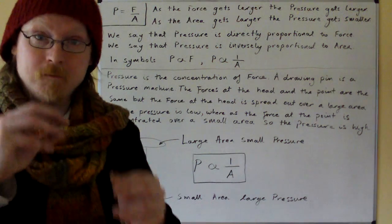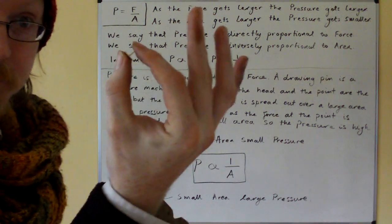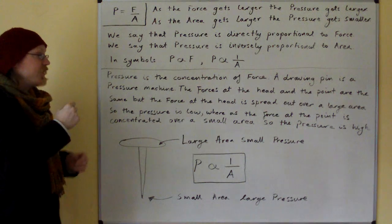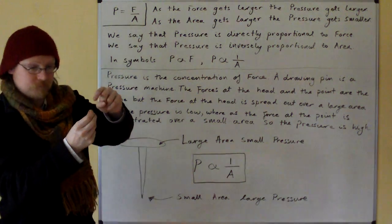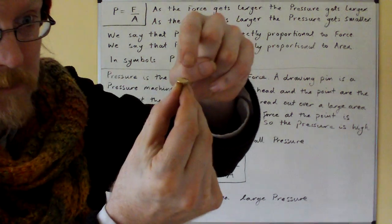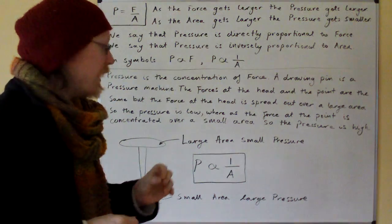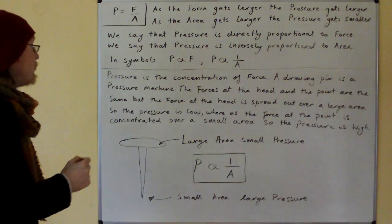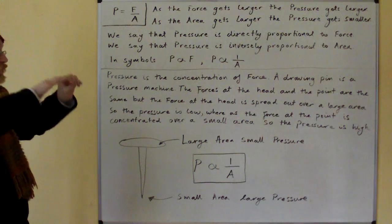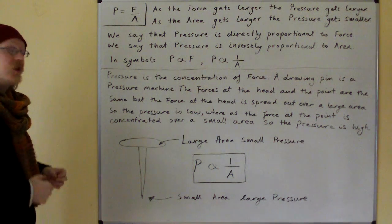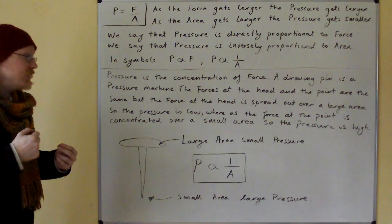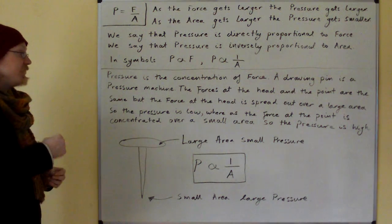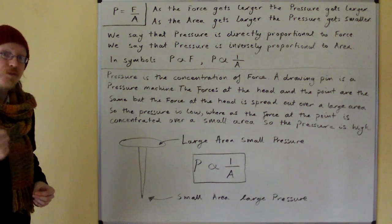The drawing pin is a pressure machine. The forces at the head and the point are the same. But the force at the head is spread out over a large area, so the pressure is low. Whereas the force at the point is concentrated over a small area, so the pressure is high.